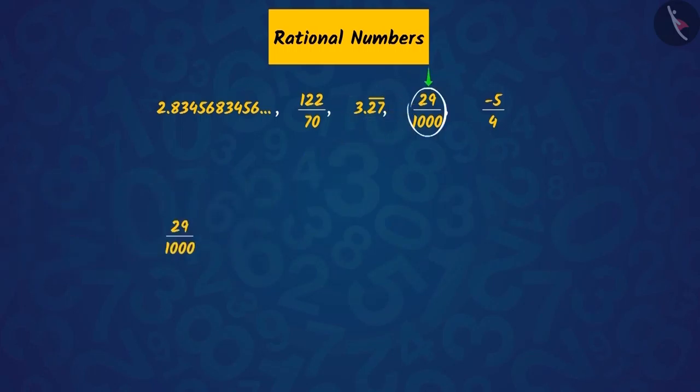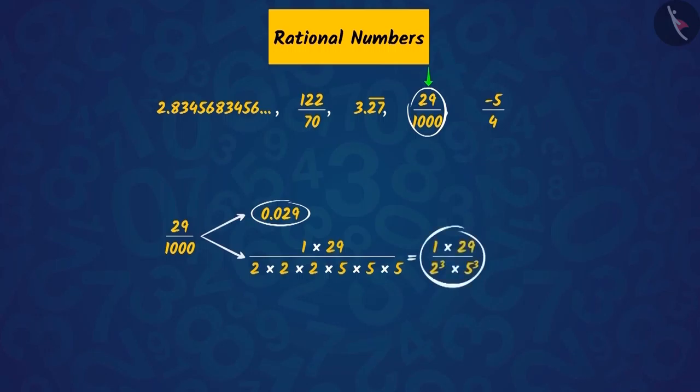Now, if we look at 29 upon 1000, we can write it straight as 0.029 based on the knowledge of our previous classes. Or, we can factorize the numerator and denominator as the denominator is in the form of 2 raised to n into 5 raised to m. Both ways lead to the same conclusion that the decimal expansion of this rational number will be terminating.